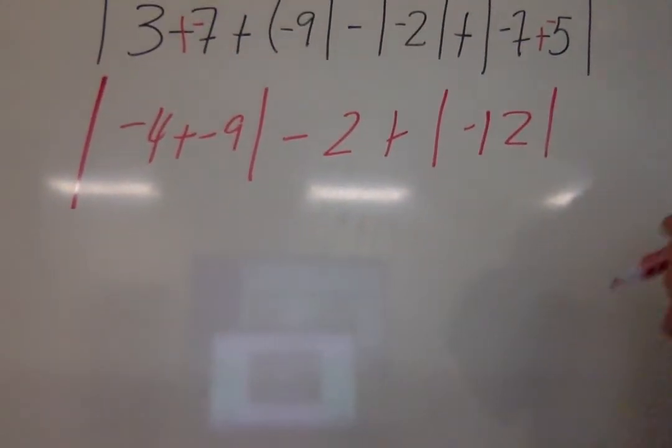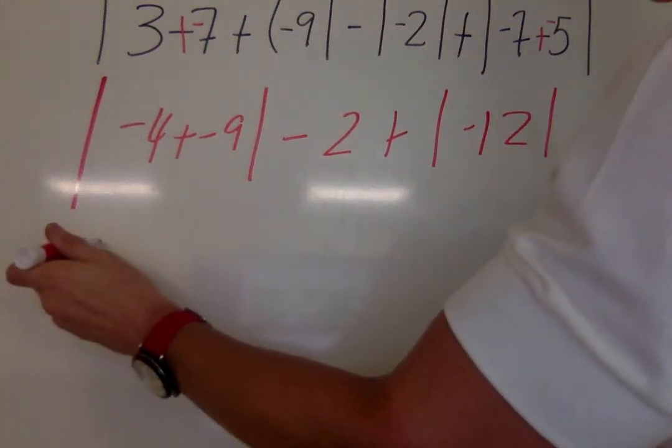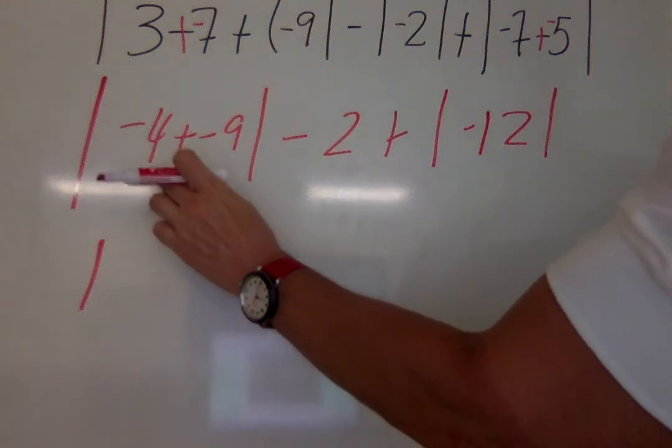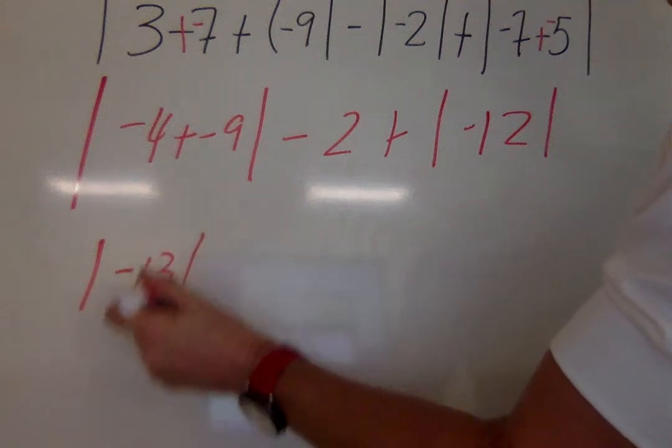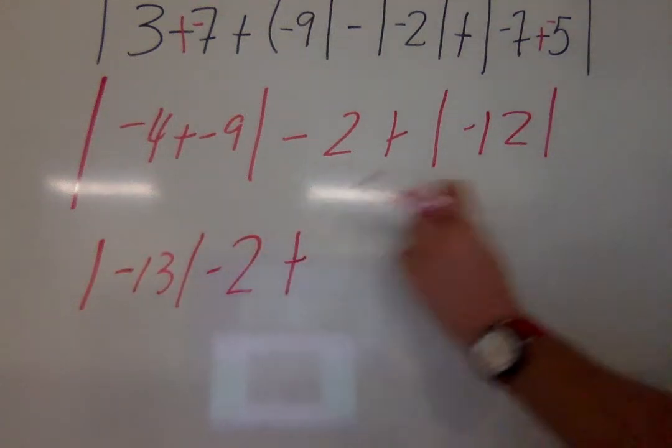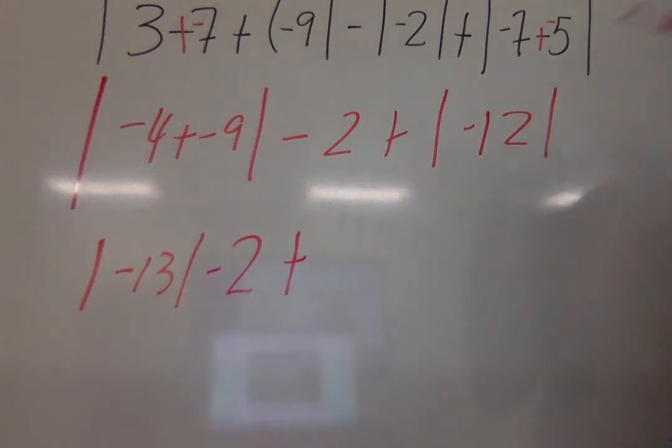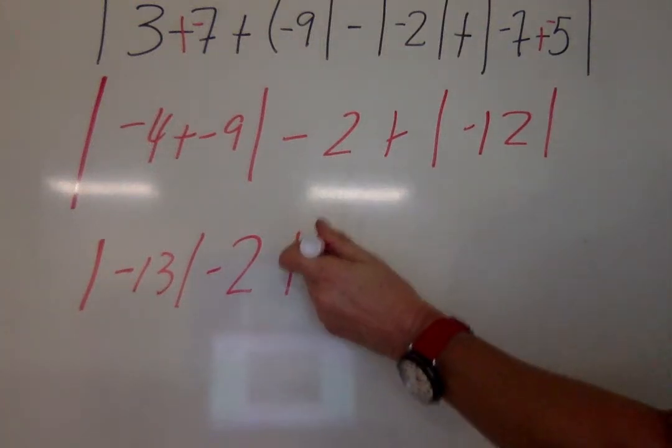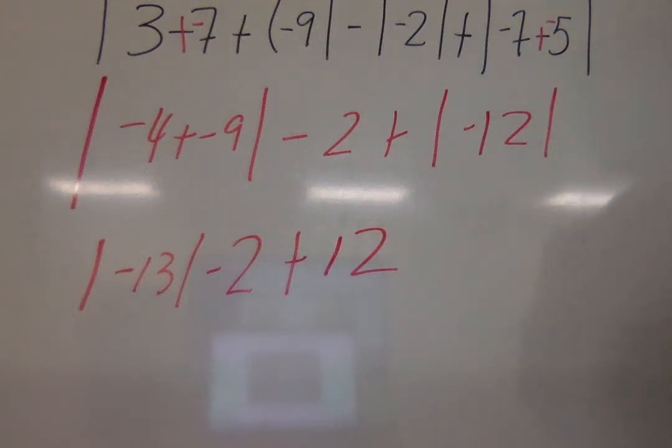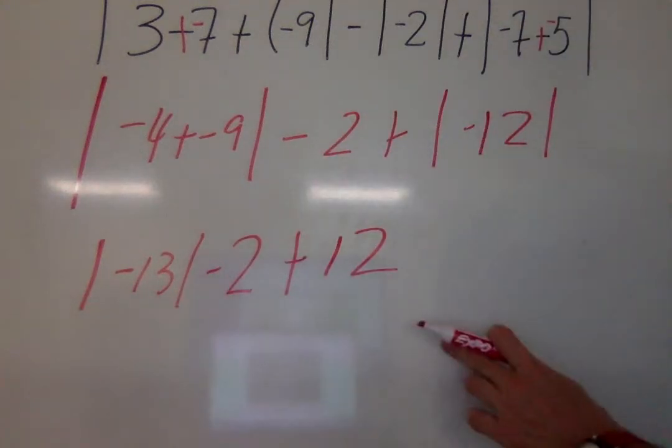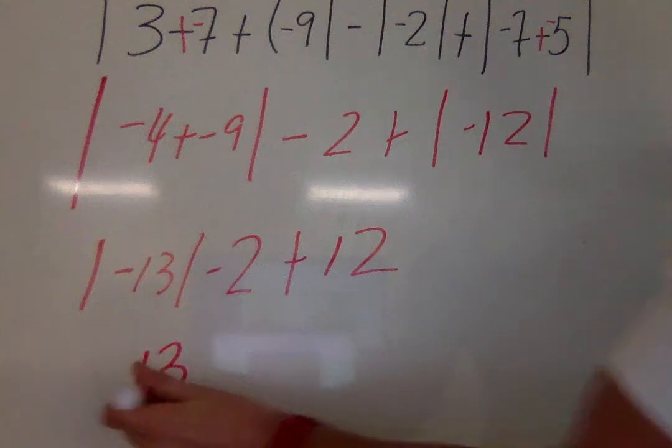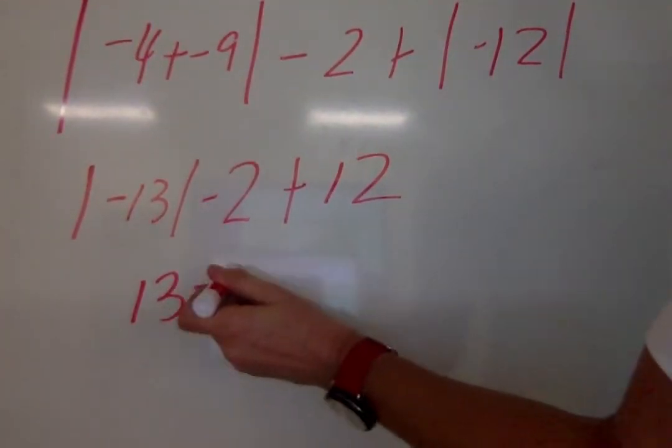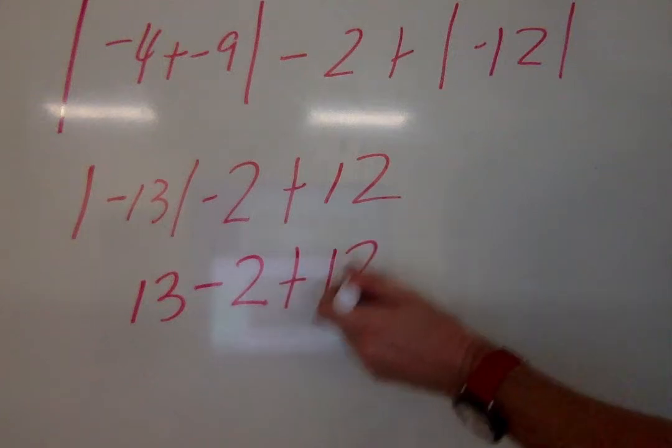Now we have to rewrite this one. Let's start back at the beginning. This takes several steps, y'all. Make sure you're writing them down. So we have the absolute value of negative 4 plus negative 9, which is negative 13 minus 2 plus, what's the absolute value of negative 12? Absolute value is always positive. So it's 12. Let's work left to right one more time. The absolute value of negative 13 is 13 minus 2 plus 12.